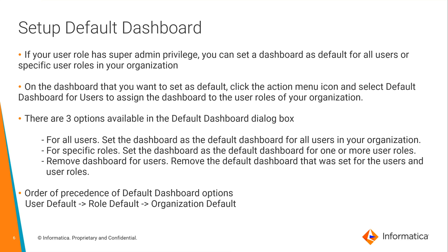On the dashboard that you want to set as default, click the action menu icon and select default dashboard for users to assign the dashboard to the user roles of your organization. There are three options available. The first option is for all users — this dashboard would be displayed as the default dashboard for all users in your organization. The second option is to set the default dashboard for specific roles, where a particular dashboard can be set as default for one or more user roles. Finally, you could remove any default dashboard that was set for users and roles and have one dashboard as the default for the entire organization.